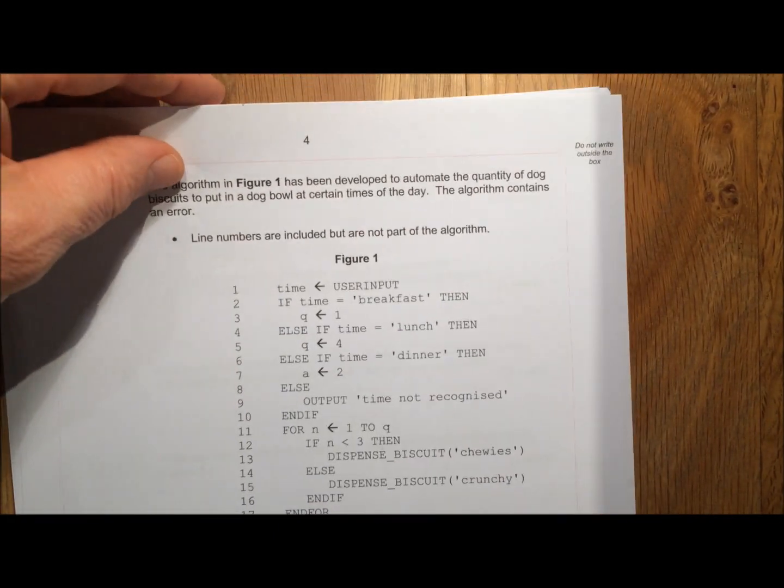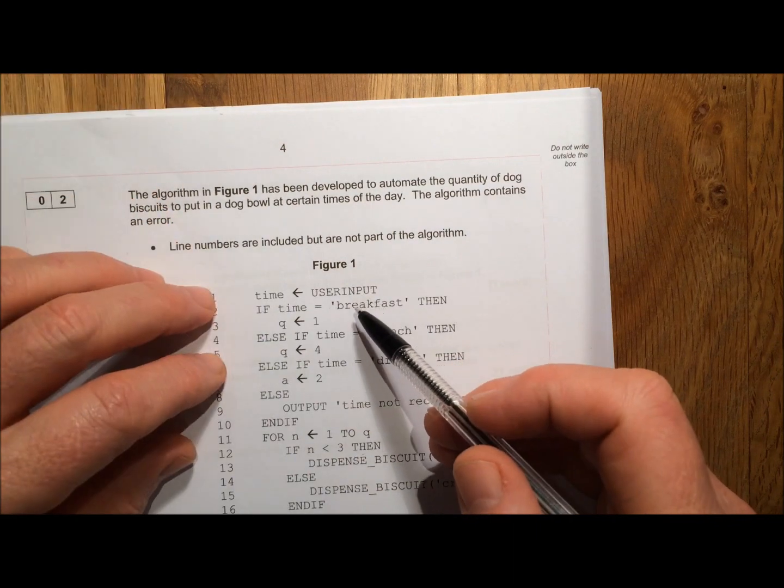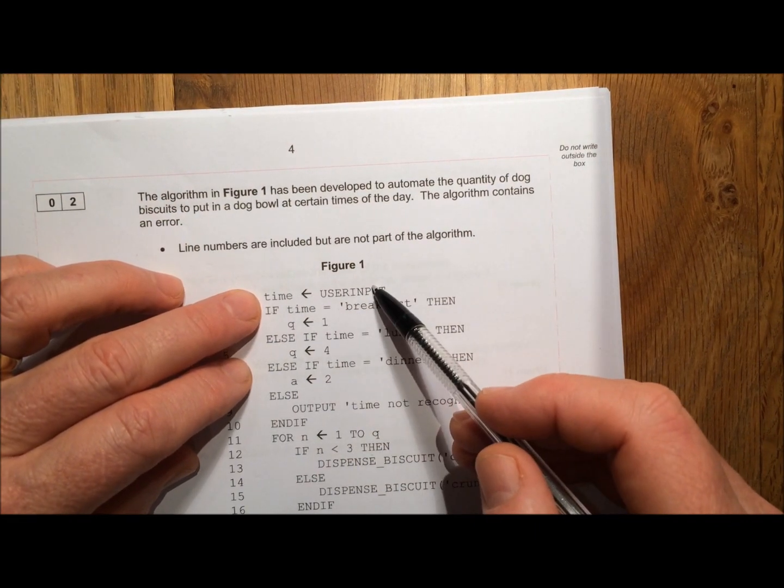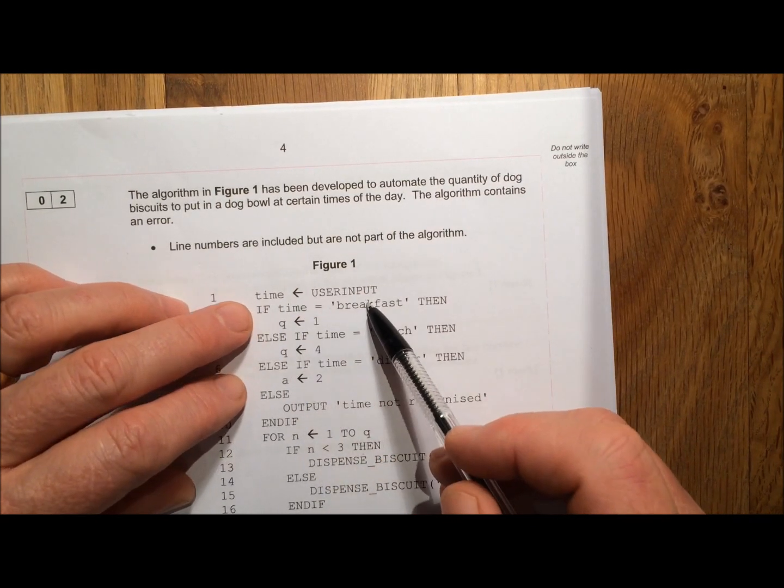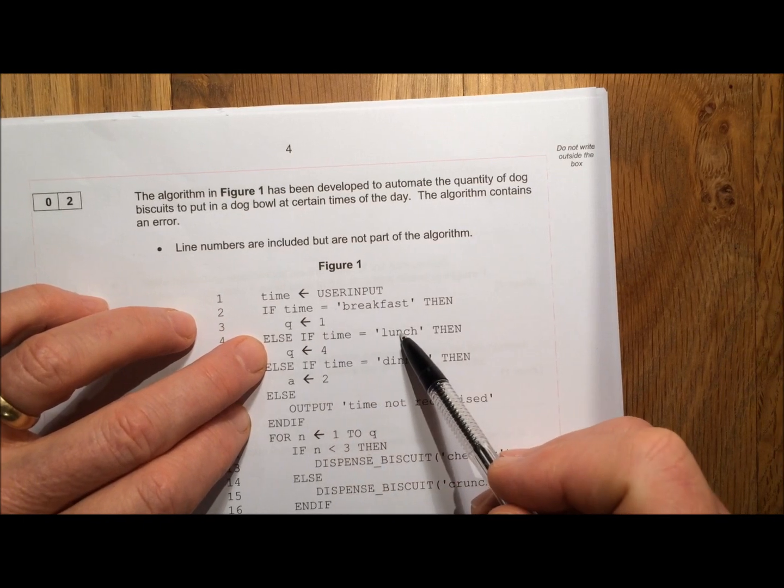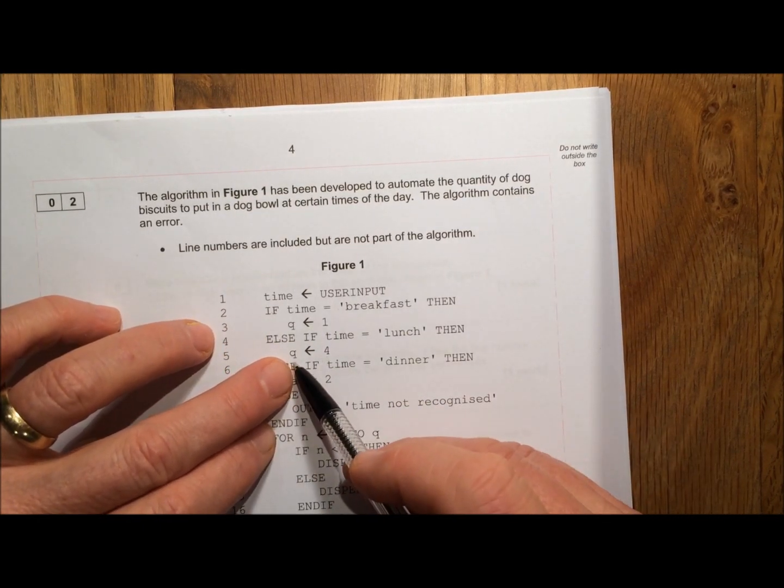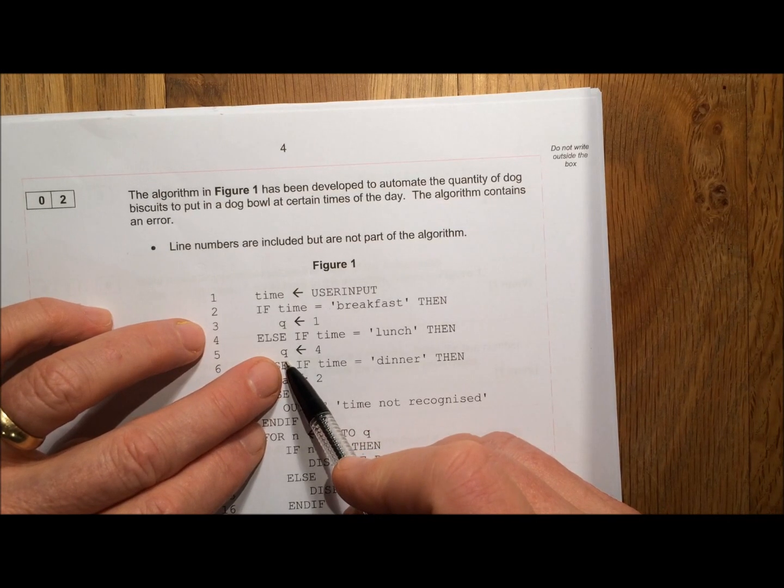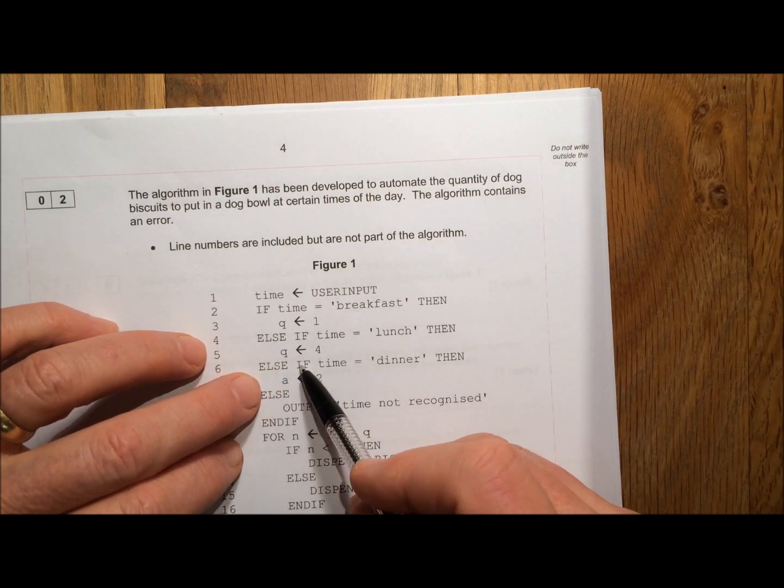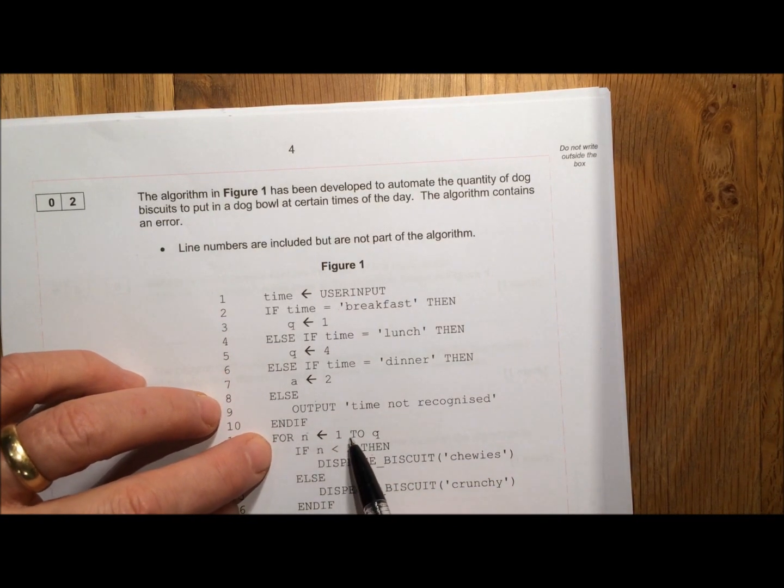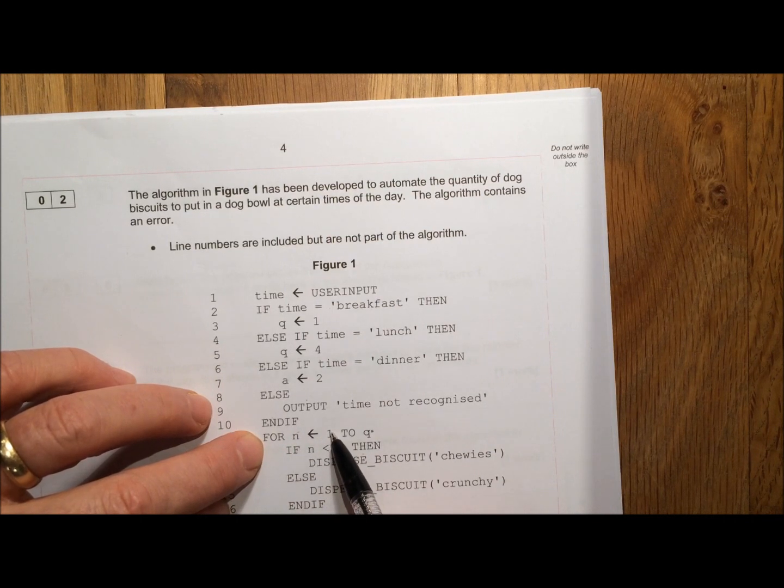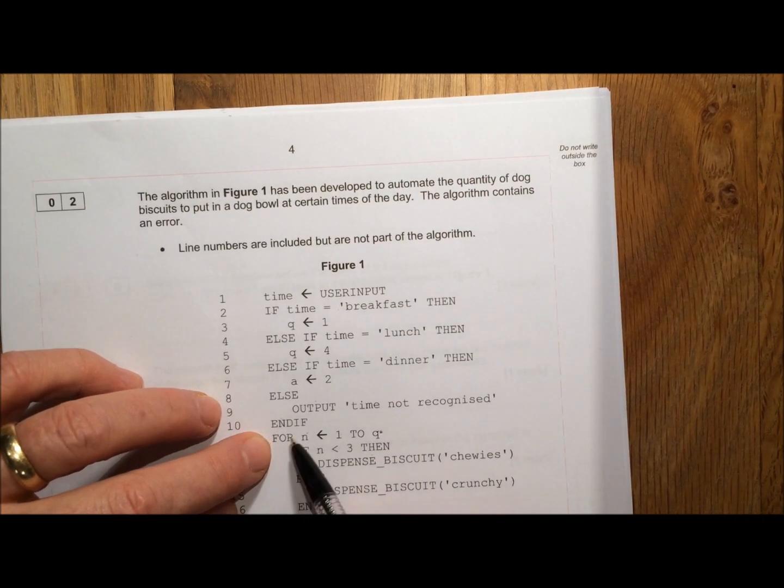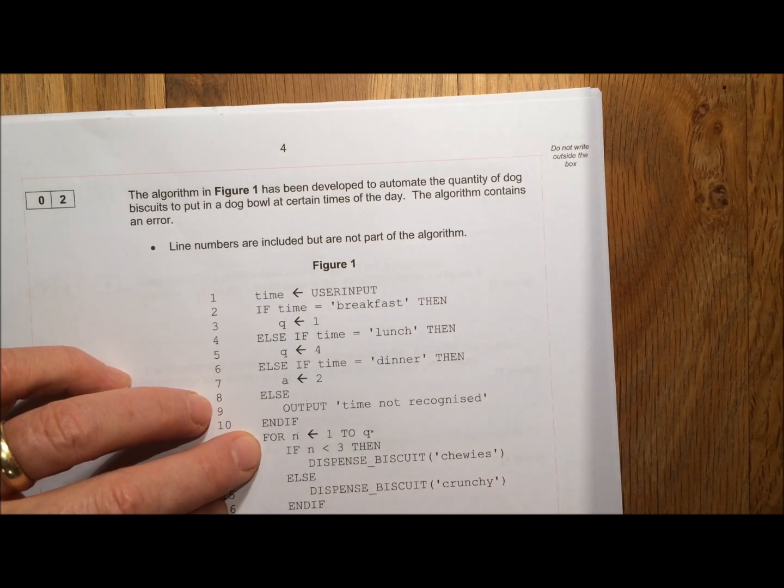Let's go back and look at our algorithm again. So if we enter lunch, user input is lunch. Time equals breakfast, it's not, so we move on. If time equals lunch, yes it is, so Q is assigned the value 4. Q is now 4. So now we fall out the bottom. Q we know now is 4. So N is going to go from 1 to 4. N is 1, N is 2, N is 3, N is 4. That's it, out we go.